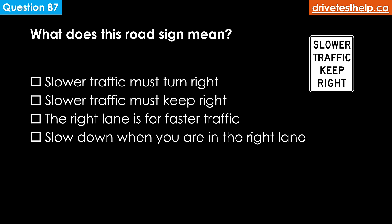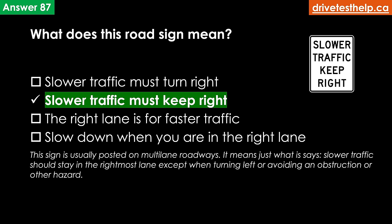What does this road sign mean? Options: slower traffic must turn right; slower traffic must keep right; the right lane is for faster traffic; slow down when you are in the right lane. The correct answer is slower traffic must keep right. This sign is usually posted on multi-lane roadways — slower traffic should stay in the rightmost lane except when turning left or avoiding an obstruction.